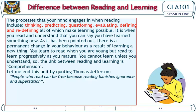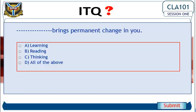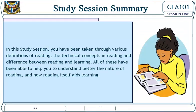It is when you read and understand that you can say you have learned something new. There is a permanent change in your behavior as a result of learning a new thing. You learn to read when you are young, but you read to learn progressively as you grow up. You cannot learn unless you understand, so the link between reading and learning is comprehension. Let me end this unit by quoting Thomas Jefferson: 'People who read can be free because reading banishes ignorance and superstition.'